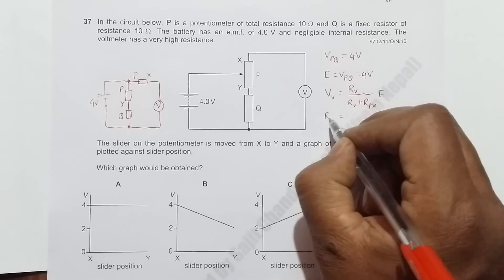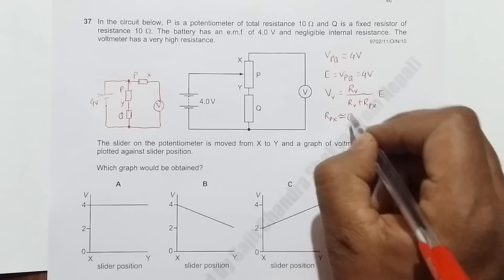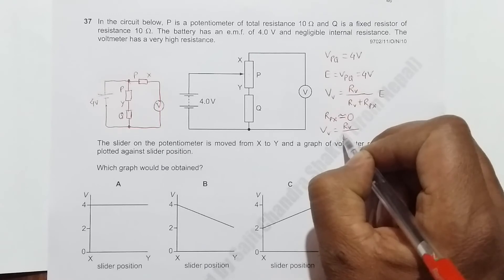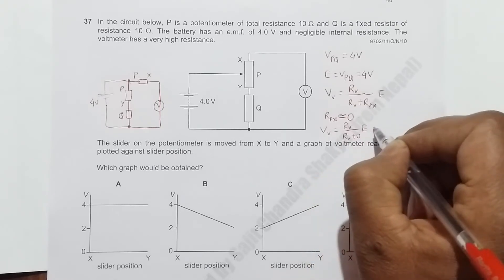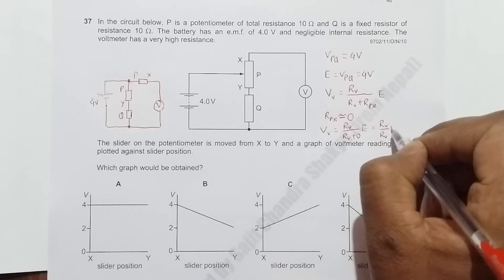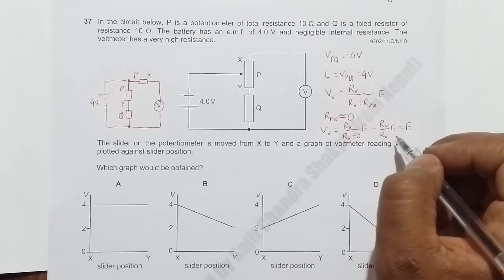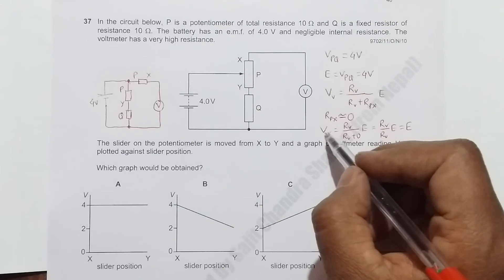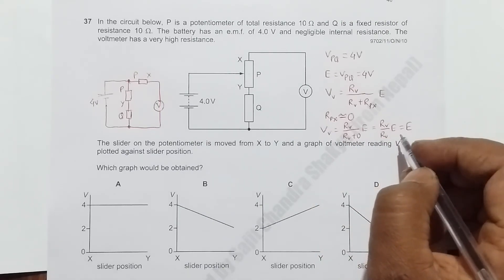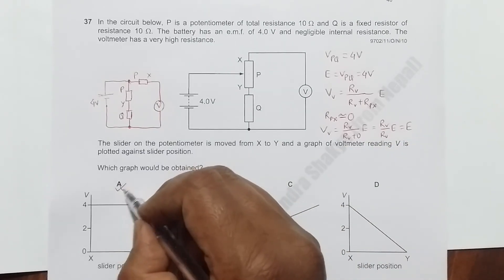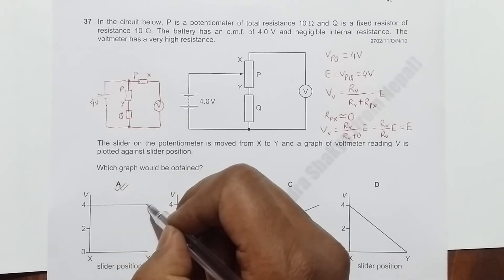This gives me V equals R_V by (R_V plus 0) times E, which equals R_V by R_V times E, which equals E. So whatever the position of the slider, V recorded by the voltmeter will equal E, which is 4 volts. The graph should be choice A because it shows the value of V is constant at 4 volts.